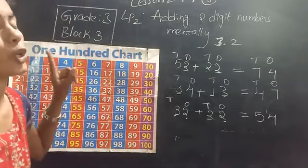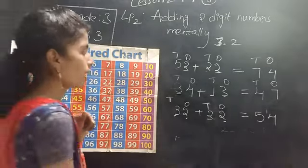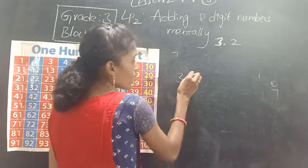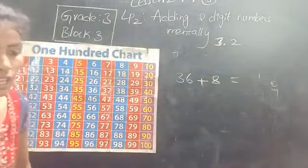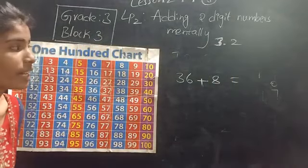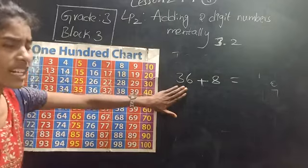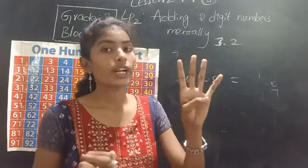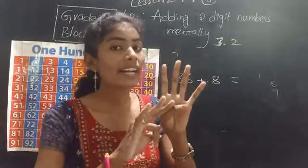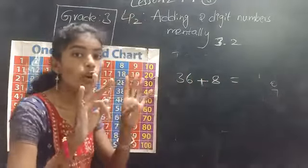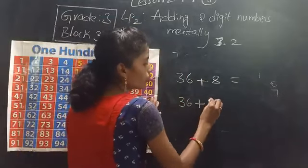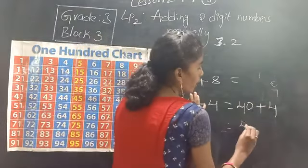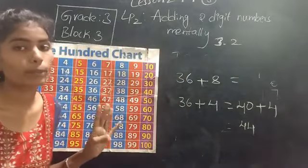Now I am going to add a 2-digit number with a 1-digit number mentally. For example, 36 plus 8. By making 10s you can do this. Take 36 — from 36 count on: 37, 38, 39, 40. To get to 40, how many numbers did you add from 8? You added 4 numbers. So 36 plus 4 equals 40, and the remaining from 8 is 4. So 40 plus 4 equals 44.